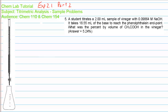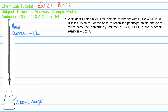Let's have a look at the equipment we would use — typical titration equipment. In this setup, the burette is loaded with standard sodium hydroxide at a concentration of 0.09864 moles per litre. In the Erlenmeyer flask is placed the aliquot of vinegar — in this case, 2.00 millilitres. It took 18.55 millilitres of sodium hydroxide to reach the endpoint, so the titer figure was 18.55 mL.